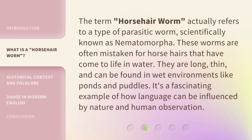The term 'horsehair worm' actually refers to a type of parasitic worm, scientifically known as nematomorpha. These worms are often mistaken for horsehairs that have come to life in water. They are long, thin, and can be found in wet environments like ponds and puddles. It's a fascinating example of how language can be influenced by nature and human observation.